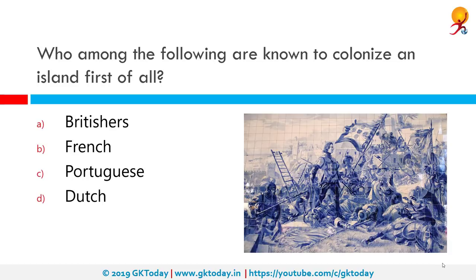Who among the following are known to have colonized the first island? The correct answer is the Portuguese. They were the first to colonize an island. The Atlantic Islands of Madeira, colonized in 1419, and the Azores, colonized in 1427, were reached and settled, producing wheat for export to Portugal.